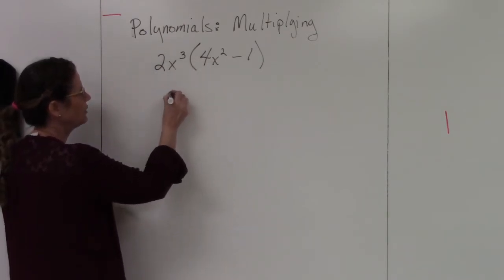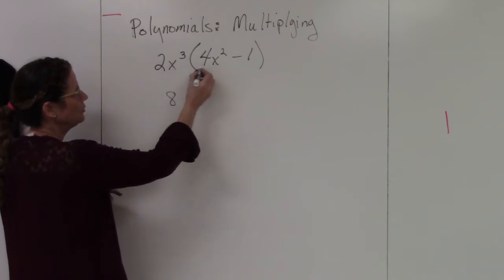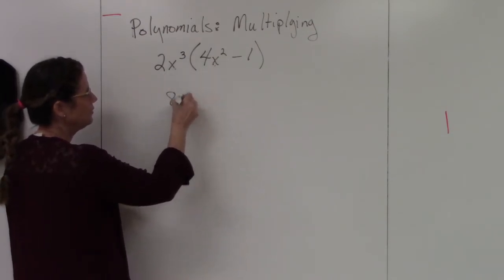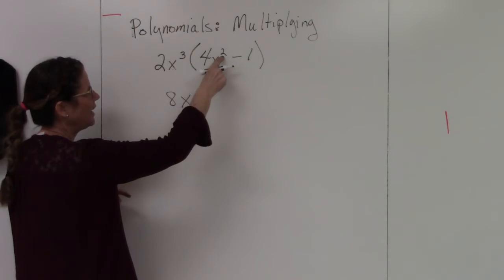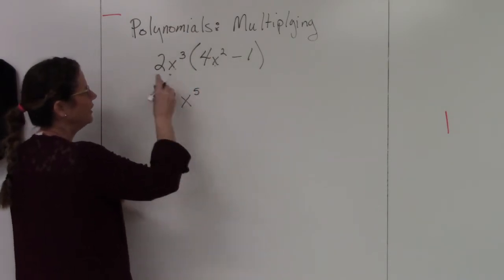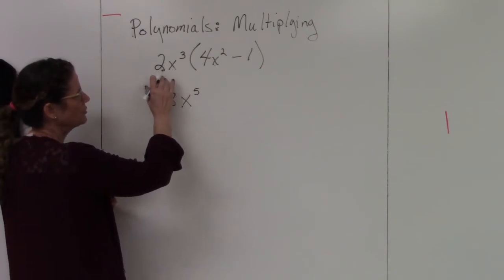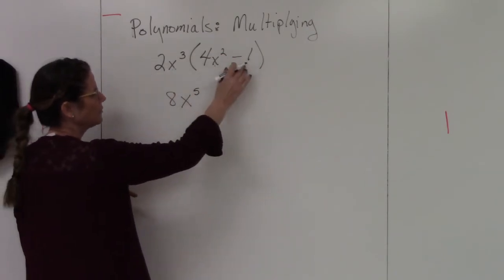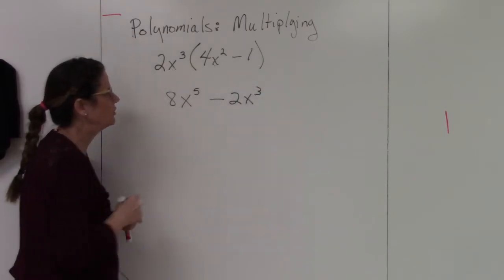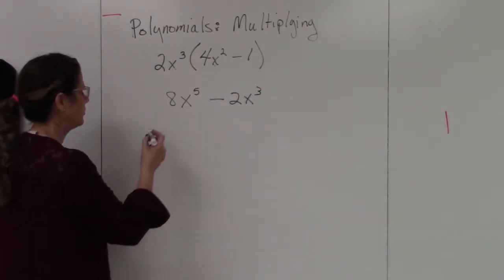So 2 times 4 is 8. Then I have x cubed times x squared — the base stays the same and I add the exponents: 3 plus 2 is 5. Then I come back and multiply 2x cubed times negative 1, and I get negative 2x cubed. So it's just the distributive property.